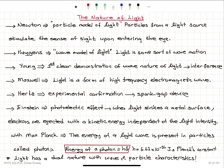Huygens has a wave model of light, saying that light is some sort of wave motion. Later we will talk about Huygens' principle, where you will see that when a plane light wave hits a slit, all points in the slit act as point sources of light.